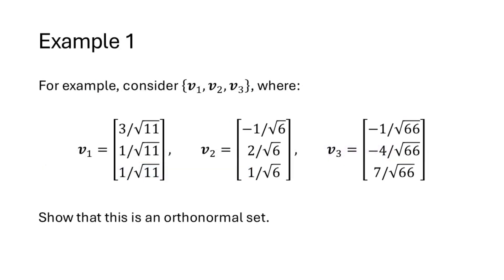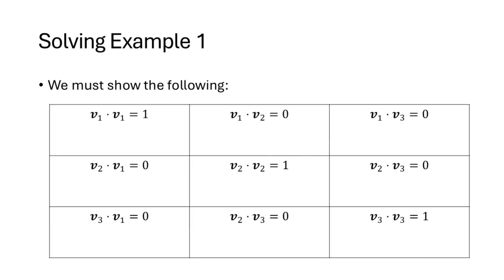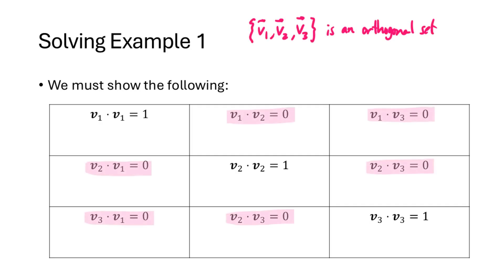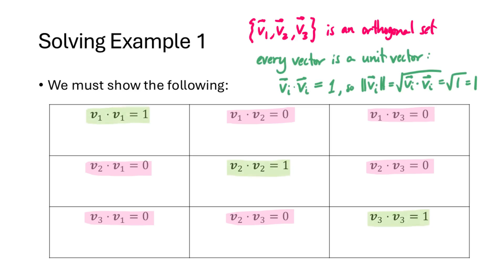For example, given three vectors v1, v2, and v3, we want to show this is an orthonormal set. First we need to show that the set is orthogonal — that vi dot vj equals 0 whenever i is not equal to j. Those are the highlighted dot products shown here. Then we need to show every vector is a unit vector, meaning vi dot vi equals 1 — those are the dot products along the diagonal of this chart.